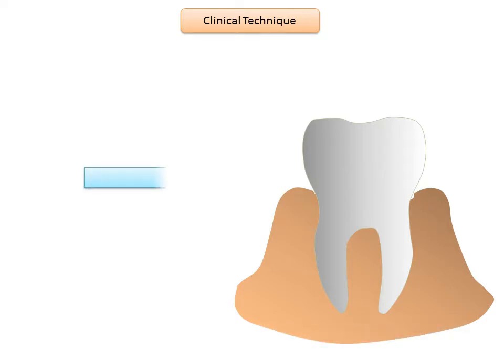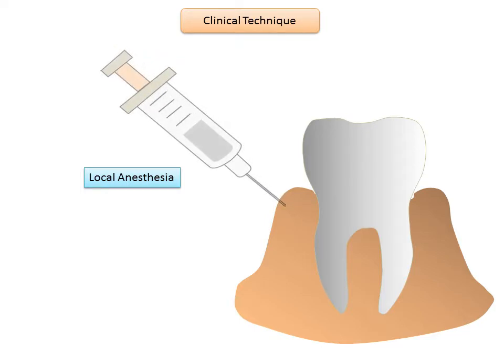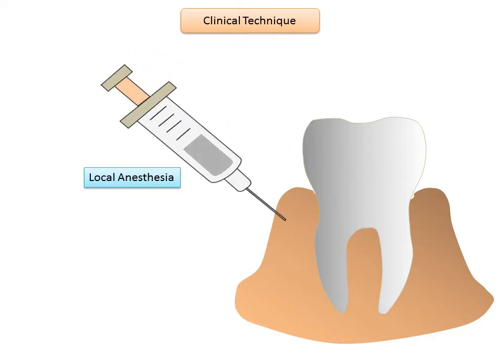The preliminary steps: number one is local anesthesia. This is preferred in most patients as it reduces apprehension and salivation. Administering local anesthesia makes the patient relaxed and comfortable, thus contributing to better operative dentistry, especially while placing bonded restorations.